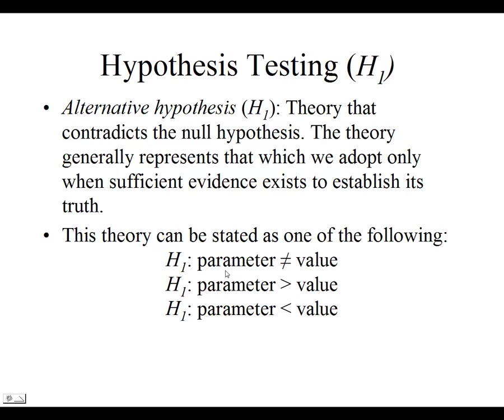If the question indicates that you are looking for a difference in the parameter and a value, the null is the equal sign as always, and the alternative will be the doesn't equal sign. If you're looking for the value to be greater than a number, use the greater than sign. Less than a number, the less than sign. Something about the question or situation will indicate which of these three you're going to choose.